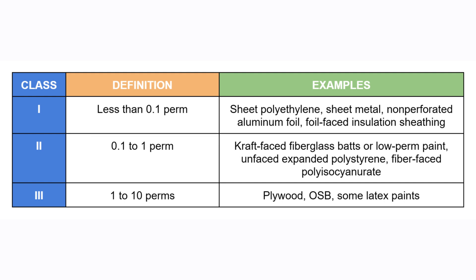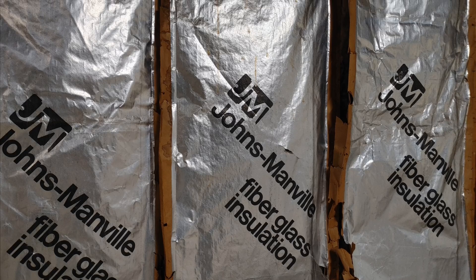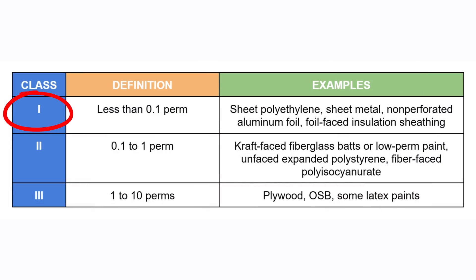Materials that have a perm rating less than 0.1 perms are class 1 vapor retarders, which are considered to be strong vapor barriers. We're talking about polyethylene, foil facings, and most roof membranes. We want to use class 1 vapor retarders very intentionally.